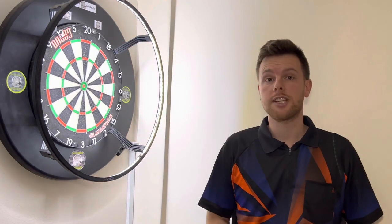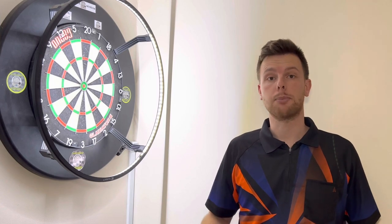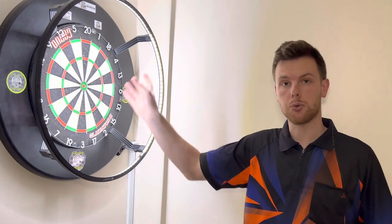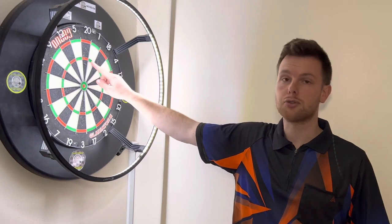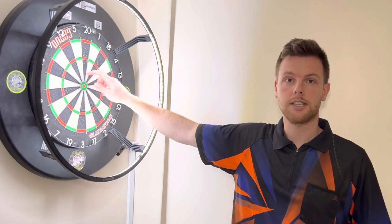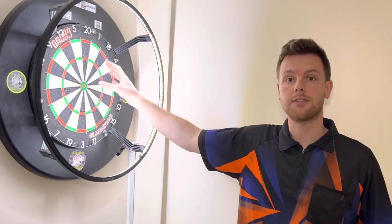Now there's different ways of playing this game but the most simple way of playing for a beginner is to just aim for the whole segment. You're aiming for either the double, the single, the treble or the inner single. It doesn't matter. As long as it's in that same number it's fine.